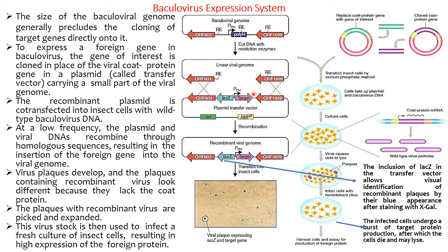Once the transfer vector enters the insect cell line along with the plasmid, recombination takes place. The restriction enzyme site present in the baculovirus genome expresses its enzyme and cuts off the polyhedrin gene. After that, homologous recombination occurs, inserting the lacZ and target gene into the viral genome. The inclusion of lacZ in the transfer vector allows visual identification of recombinant plaques after staining.